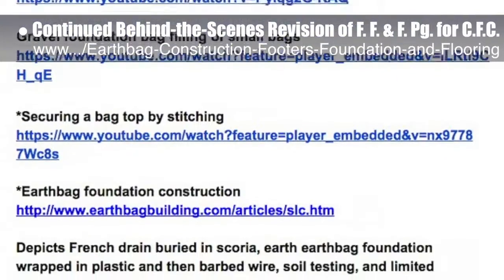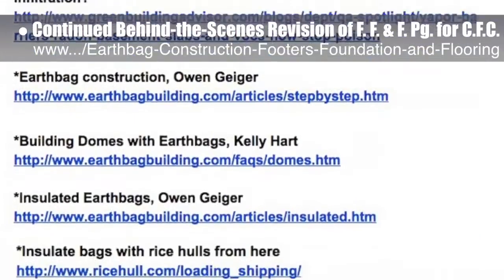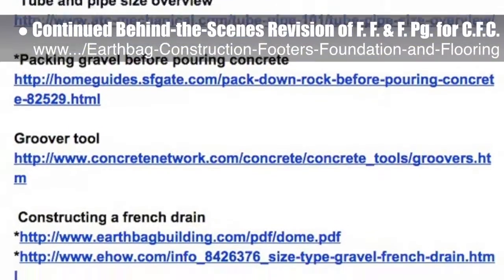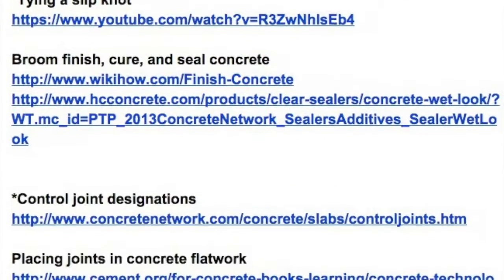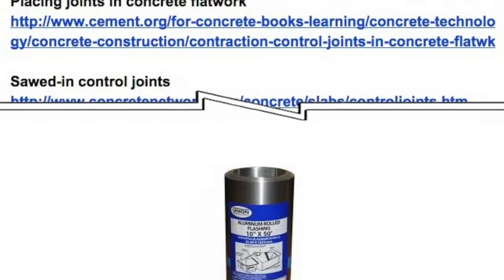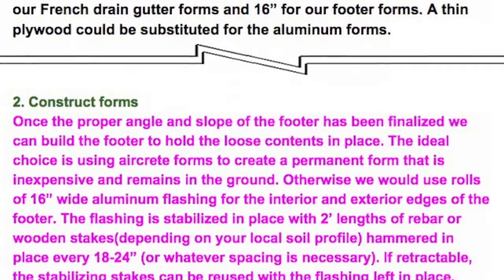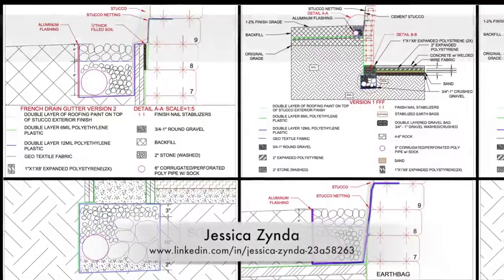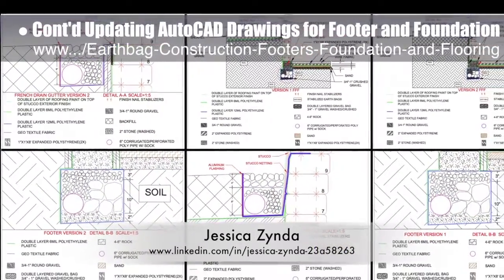This week we verified video and other references noted in section 16 resources while making corrections on pages 64 to 161 relating to reference, applications, and accuracy to our specific project. We also initiated another comprehensive review with changes throughout the document: heading color changes, reaffirming measurements, grammar, sentence structure, and adding two additional flashing sizes — 12 inch for French train gutter and 16 inch for footer. We'd say we are now 94% complete with this total update and rewrite. Jessica Zinda, drafter and designer, also continued updating the AutoCAD drawings for the footer and foundation.